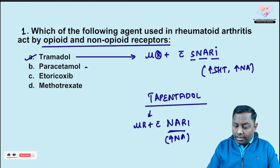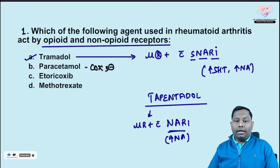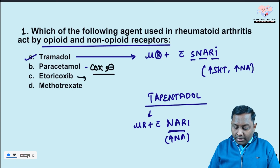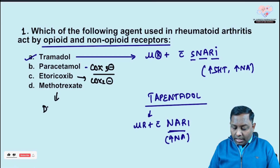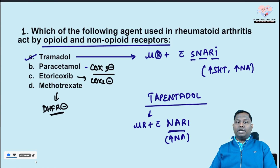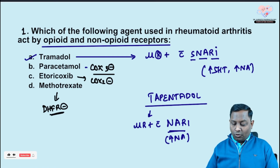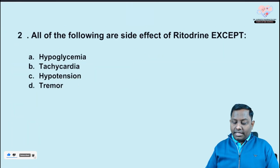Paracetamol is a COX-3 inhibitor; it is mainly an analgesic with no anti-inflammatory property. Etoricoxib is a coxib — a selective COX-2 inhibitor. Methotrexate is a dihydrofolate reductase inhibitor with many uses including rheumatoid arthritis, psoriasis, choriocarcinoma, and osteosarcoma.